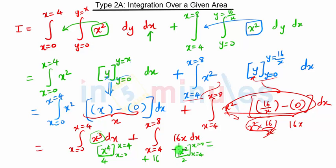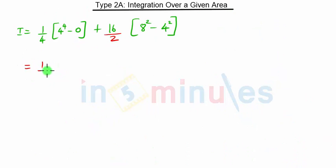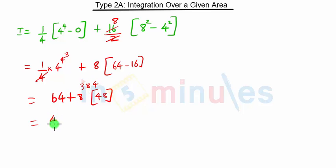Substituting the limits: 1 upon 4 into (4 raised to 4 minus 0) gives 4 raised to 4 upon 4, which is 4 cubed equal to 64. For the second part, 16 divided by 2 is 8, and (8 squared minus 4 squared) is 64 minus 16 equal to 48. So 8 into 48 is 384. Therefore 64 plus 384 gives 448.